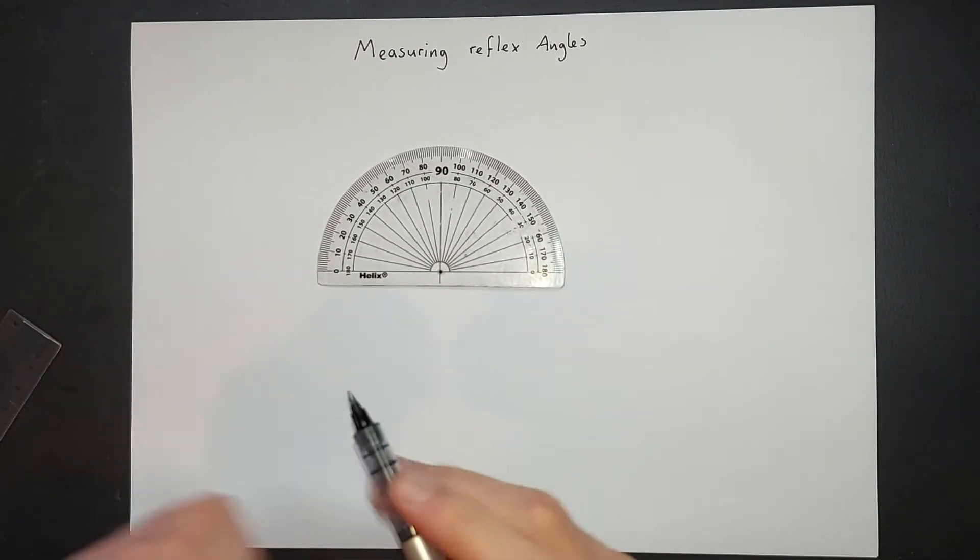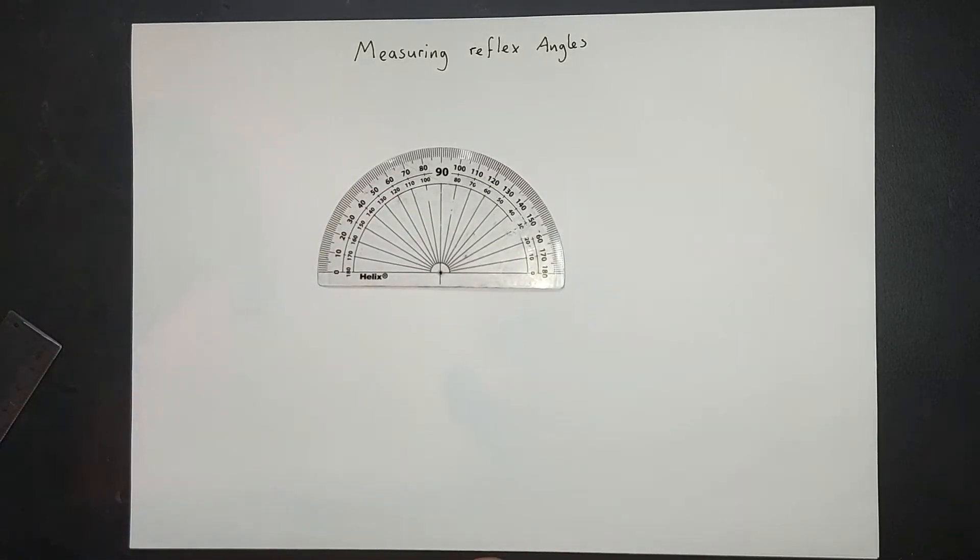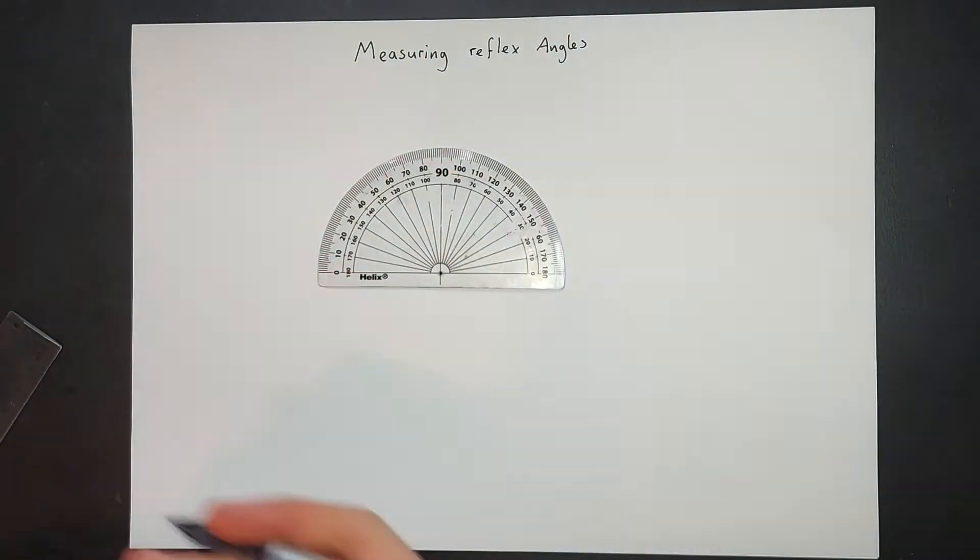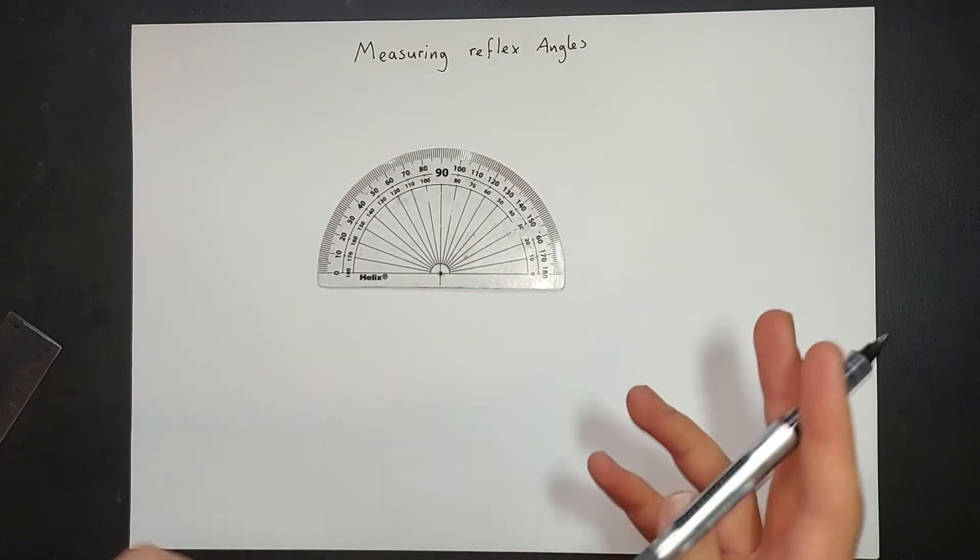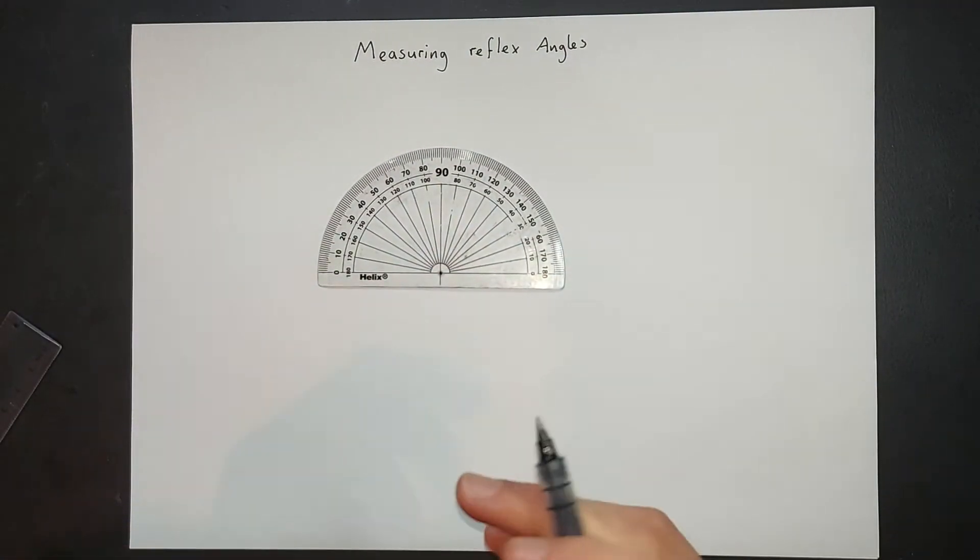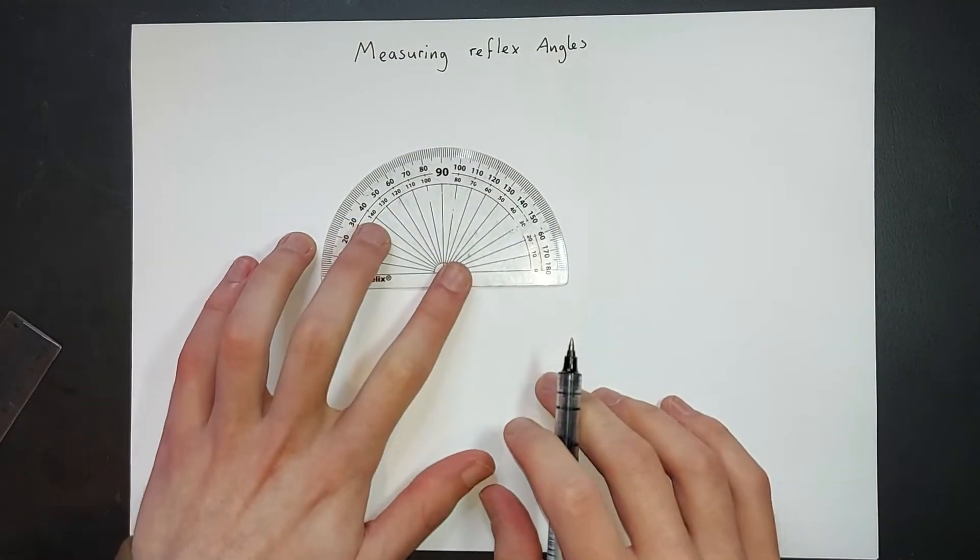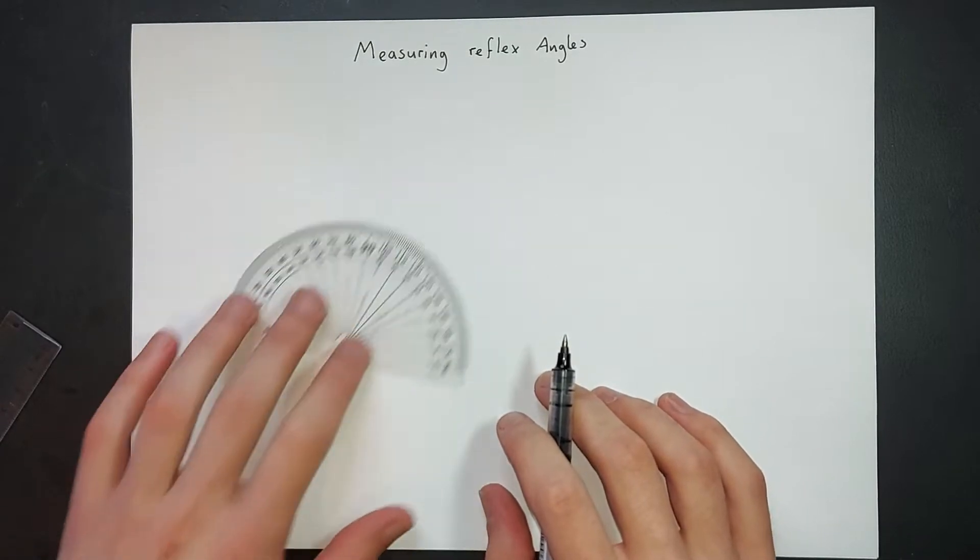So this does not go past 180 degrees and you've got to use the fact that there's 360 degrees in a full turn or a full circle in order to work out how you'd measure a reflex angle.